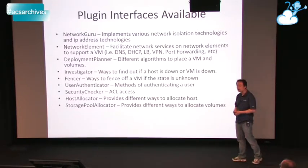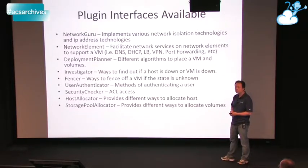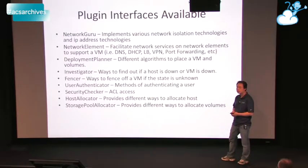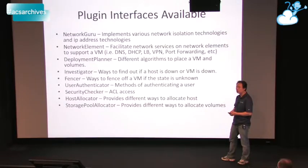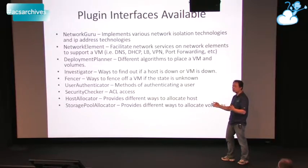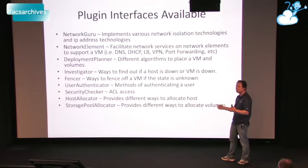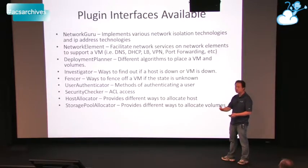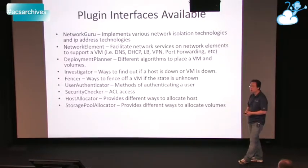Question: It appears that host allocator and deployment planner are very closely related — which gets processed first and what's the dividing line between the two? Answer: Deployment planner gets called first. Deployment planner gives you, according to the heuristics, which set of clusters you want to deploy to. Then from there we go through each host allocator and it says, for this cluster, pick me a host. And the same thing with the storage pool allocator.